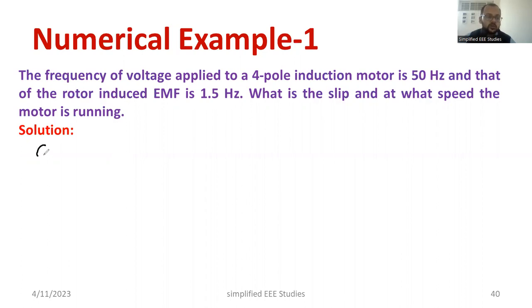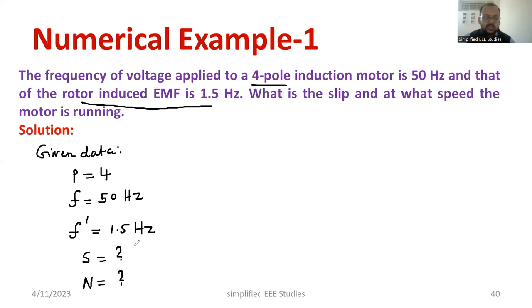So let us know the given data. What are the data they have provided us? The frequency of voltage applied to four pole induction motor. P is equal to 4, P is nothing but number of poles and 50 hertz is the stator supply frequency. F is equal to 50 hertz. The rotor induced EMF is 1.5 hertz. What is the meaning of this? It is nothing but frequency of rotor current. That is nothing but 1.5 hertz. What is the slip? I would like to calculate the slip and also I need to compute what is the actual speed of rotor.